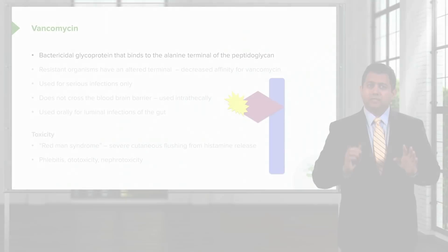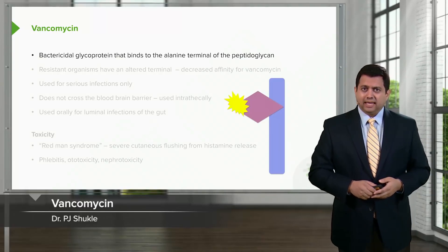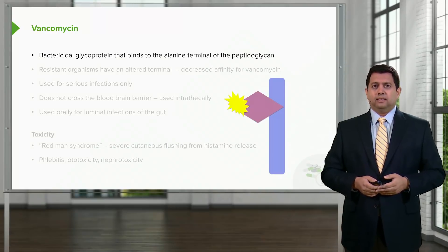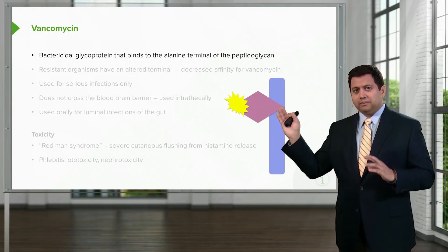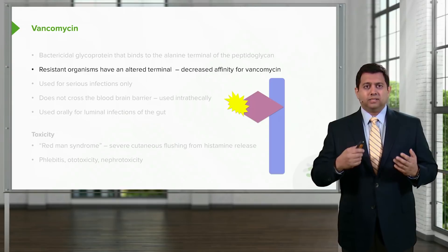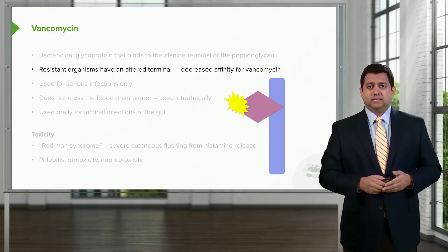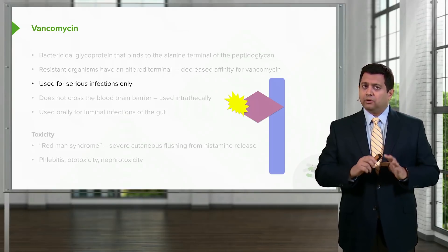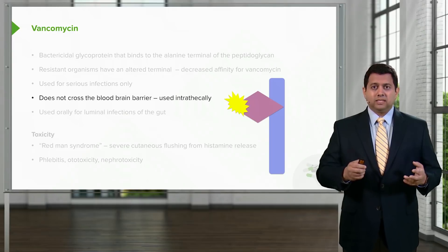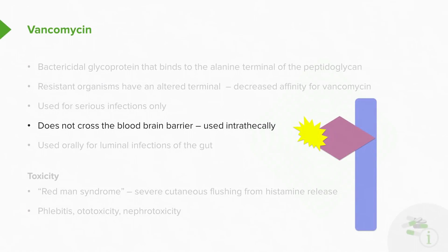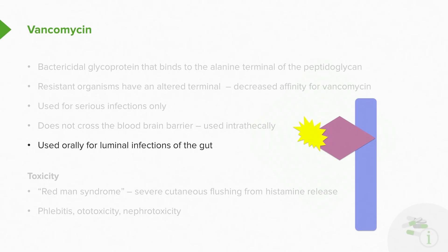Let's talk about vancomycin. Vancomycin binds to a bacterial glycoprotein on the alanine surface of the peptidoglycan. Resistant organisms have an altered terminal, resulting in decreased affinity for vancomycin. We only use vancomycin for very serious infections. Despite appearances, it is actually quite a large molecule and does not cross the blood-brain barrier. So for spinal or brain infections, we administer it intrathecally. We use it orally for luminal infections of the gut, because it is not absorbed across the gut wall, so it stays inside the gut.